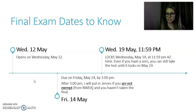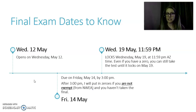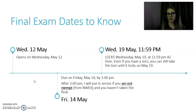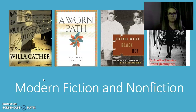Final exam dates to know: it opens Wednesday, May 12th; it is due Friday, May 14th by 3 PM — zeros will be entered after 3 if you're not exempt and haven't taken it. It locks Wednesday, May 19th at 11:59 PM. You can still take it even after a zero has been entered for missing the due date, so long as you take it before the unit locks on May 19th at 11:59 PM.